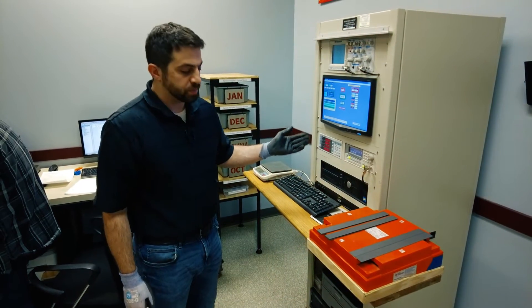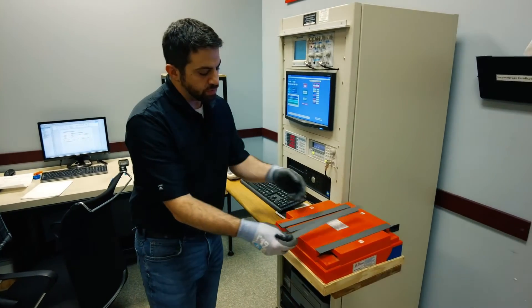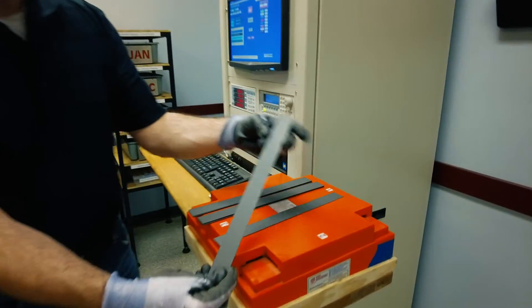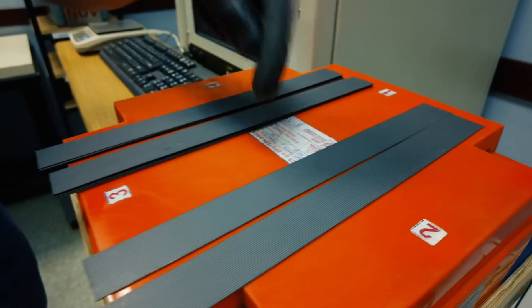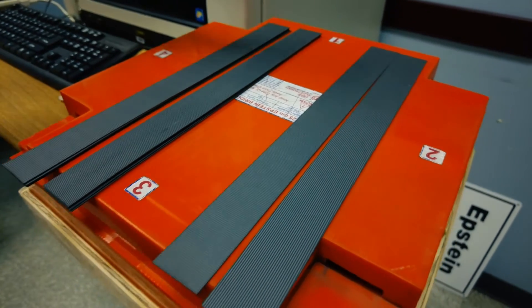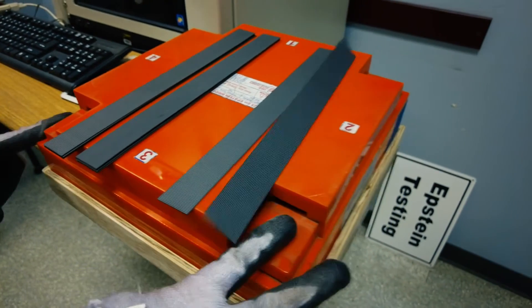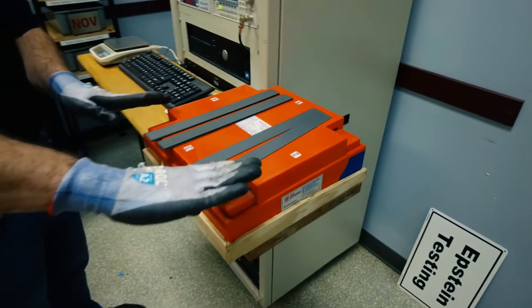This is our Epstein tester. What we'll do is take sheared pieces of material in both the grain direction, as you can see here, as well as in the transverse direction, and we'll stack them in various sides, making sure that the grain direction parts are on one side with a layer of the cross and then back.